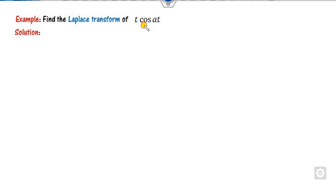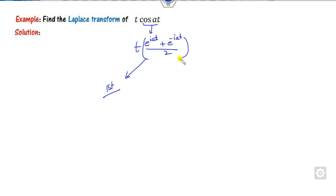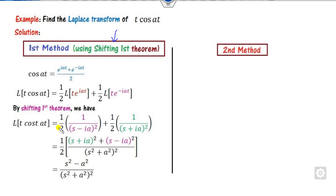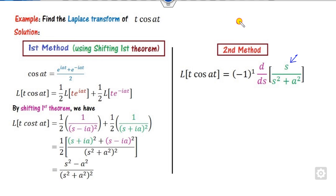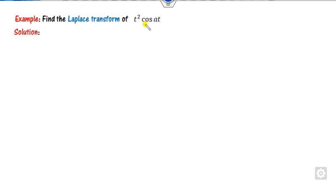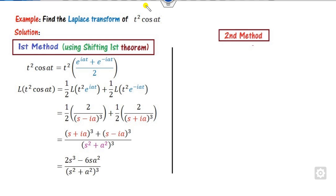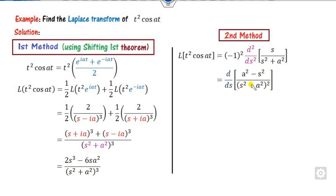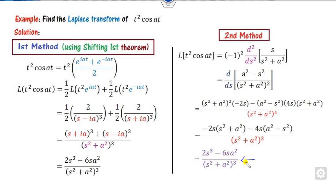Look at the next example involving a cosine term. We can write the cosine part and note the exponential part is present, so we can apply the first shifting theorem, or since a polynomial part is present, we can apply the multiplication rule. The Laplace of cos(at) is s divided by (s squared plus a squared). Since the polynomial is degree 1, we differentiate once to get the answer. For t squared, we take the second derivative; after computing the first derivative and further simplification, we get the required answer.